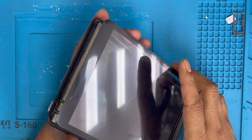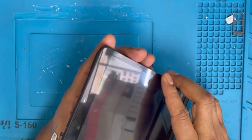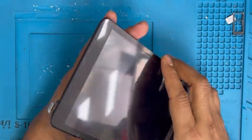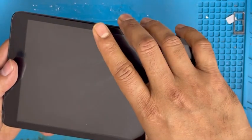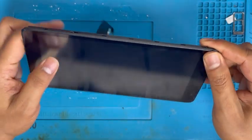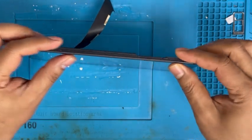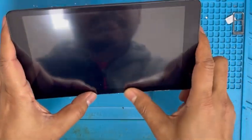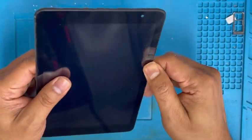Now we're gonna install the digitizer. Make it even on the backside. If you put it wrong, you can't move the digitizer, so make sure you make it even when you put it.